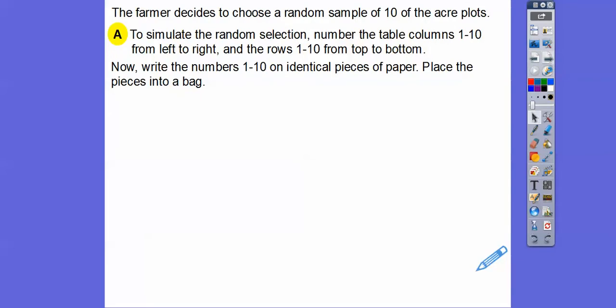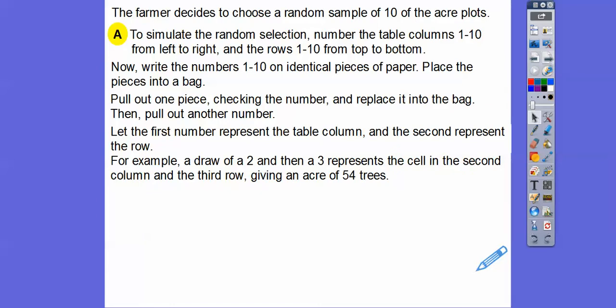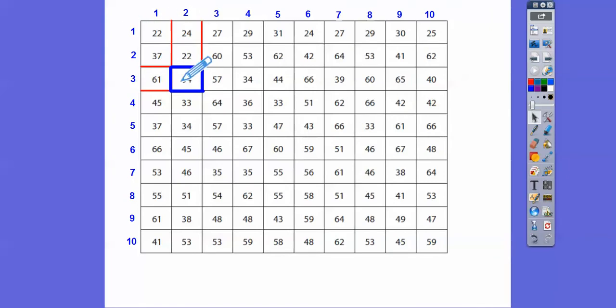And so what we can do is now write the numbers one through 10 on identical pieces of paper and place them into a bag or a hat or whatever, and then pull out one piece, check the number and replace it. You got to replace it back into the bag because the one piece will represent the columns at the top. And then when you put it back in, the second piece will represent the rows going down. So we'll pull out one piece, check the number and replace it in the bag and then pull out a number. So let the first number represent the table columns and the second number represent the rows. So for example, let's draw a two and I'm just showing you on the column right here. We'll draw a two and then a three. If we go over on the third column and then down three, so right here. So here's my two and then go down three. So that would represent that there's 54 trees in that acre plot right there. So we'll repeat that process nine more times.